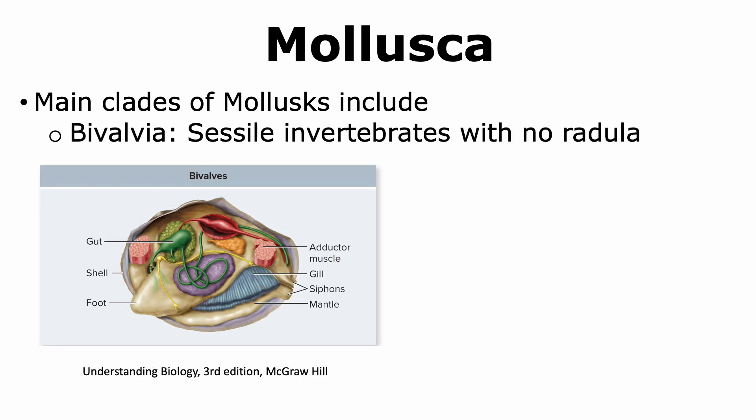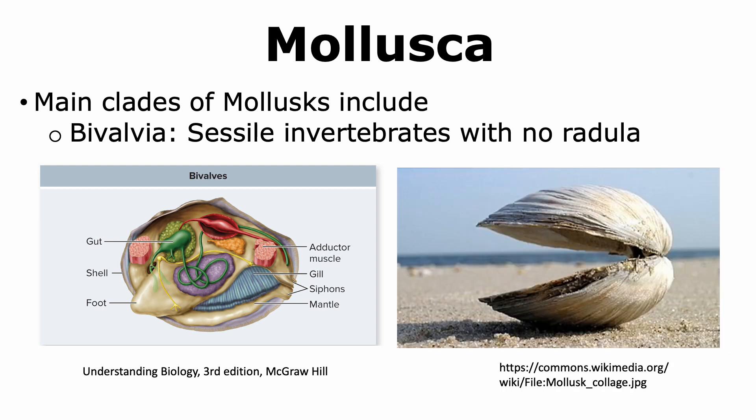Bivalvia is a clade of mollusks that includes sessile or non-motile invertebrates that do not have a radula. Bivalves include clams, oysters, and mussels, and their shell consists of two half-shells hinged together. Pearls are obtained from organisms in the clade Bivalvia. In addition to pearls from oysters, other bivalves like clams and mussels are used as food in many parts of the world.